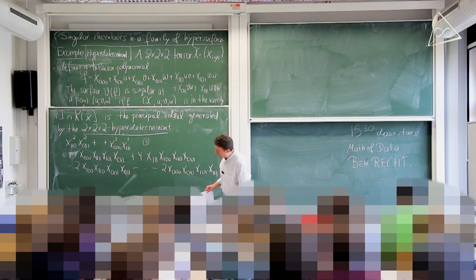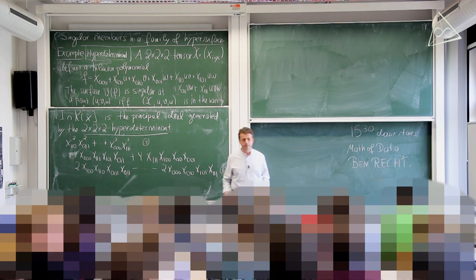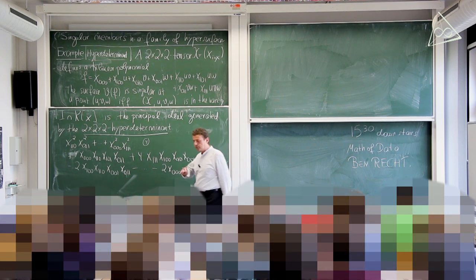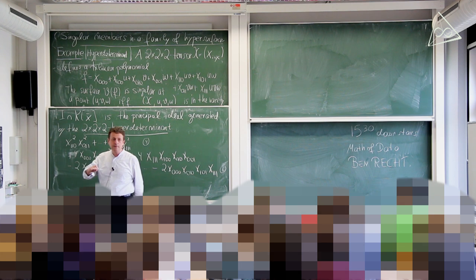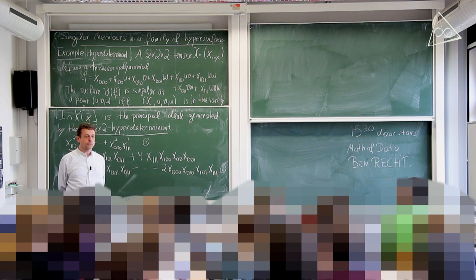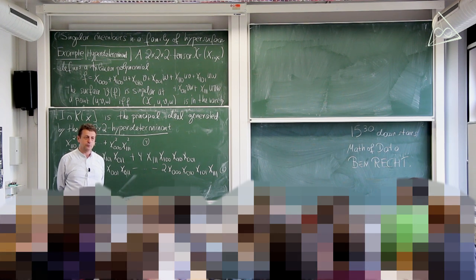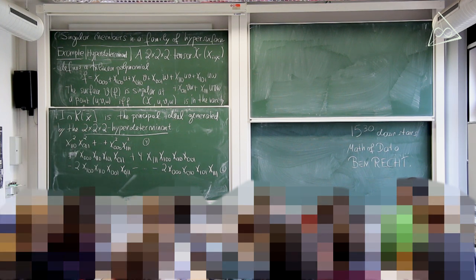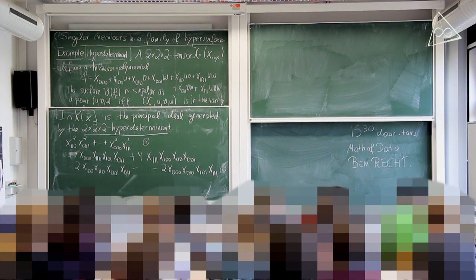A student asks what singular means here — specifically, the definition of a singular point. If you have a polynomial in u, v, w tracing out a surface in three-dimensional space, a singular point is a point (u,v,w) on the surface at which all three partial derivatives also vanish. It's a point where the variety fails to be a manifold.